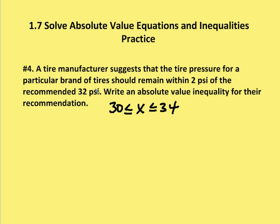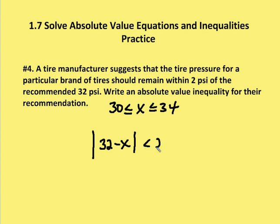We know that regardless of what we pump the tires to, when we subtract 32 from that value, we should end up with either plus or minus 2. If we're considering an absolute value number, then it's going to be 2. So the absolute value of the difference between what you have and the recommended tire pressure should always be 2. I'm going to rewrite this as the absolute value of 32 minus x — or you could write x minus 32, it doesn't matter — and this is an inequality, so it needs to be less than 2.